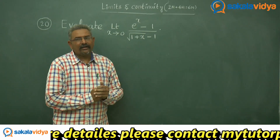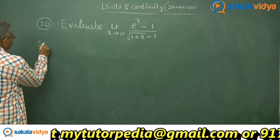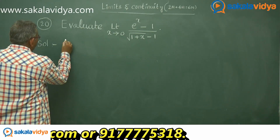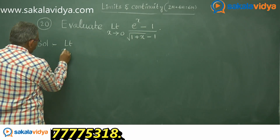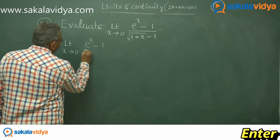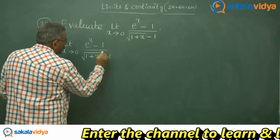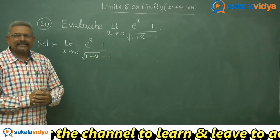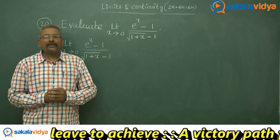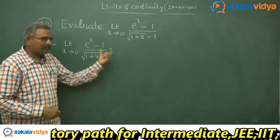Let us see how we will get the answer. Limit x tends to 0 of e power x minus 1 divided by root of 1 plus x minus 1. In this case, let us rationalize the denominator — that means multiply both numerator and denominator with root of 1 plus x plus 1.